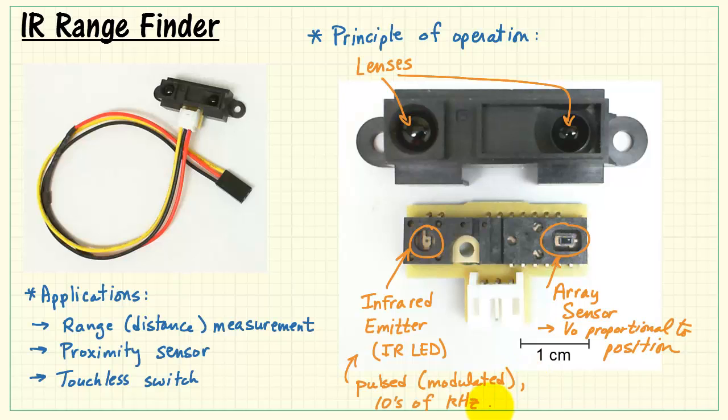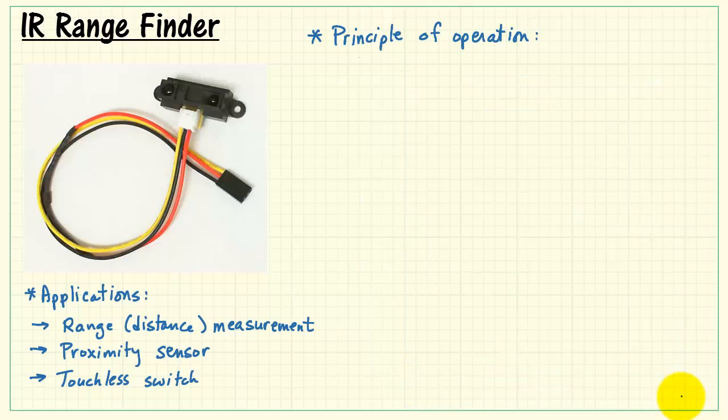The infrared emitter is a pulsed or modulated signal in the tens of kilohertz range. The array sensor is tuned to the same frequency. That means that the IR rangefinder is relatively insensitive to ambient light interference or shadows or other types of non-ideal situations.